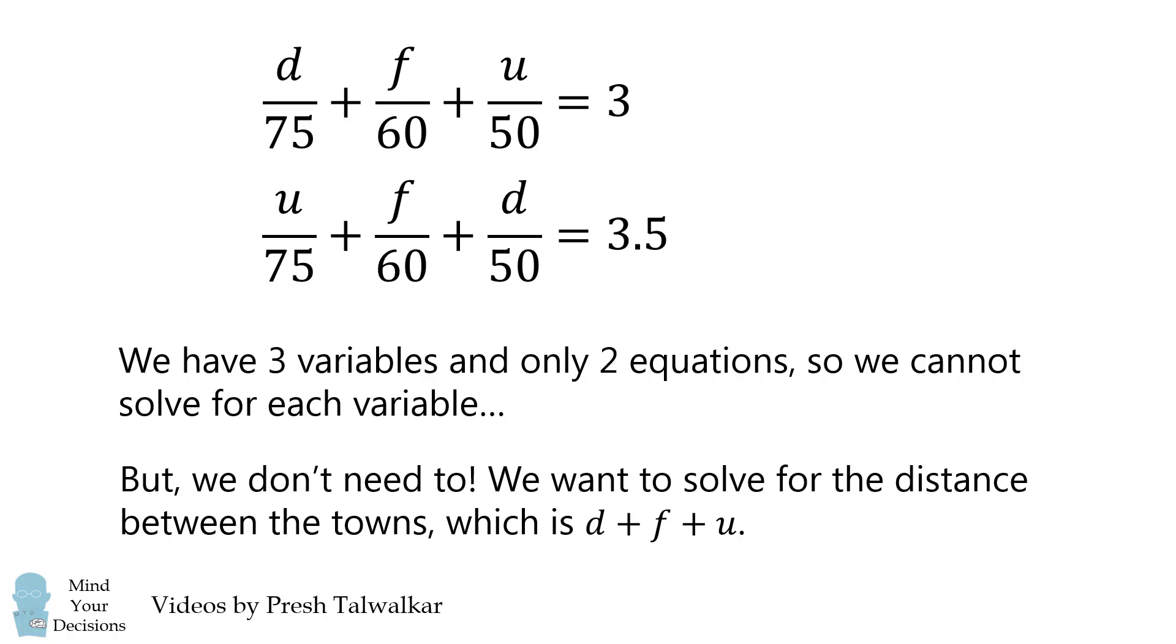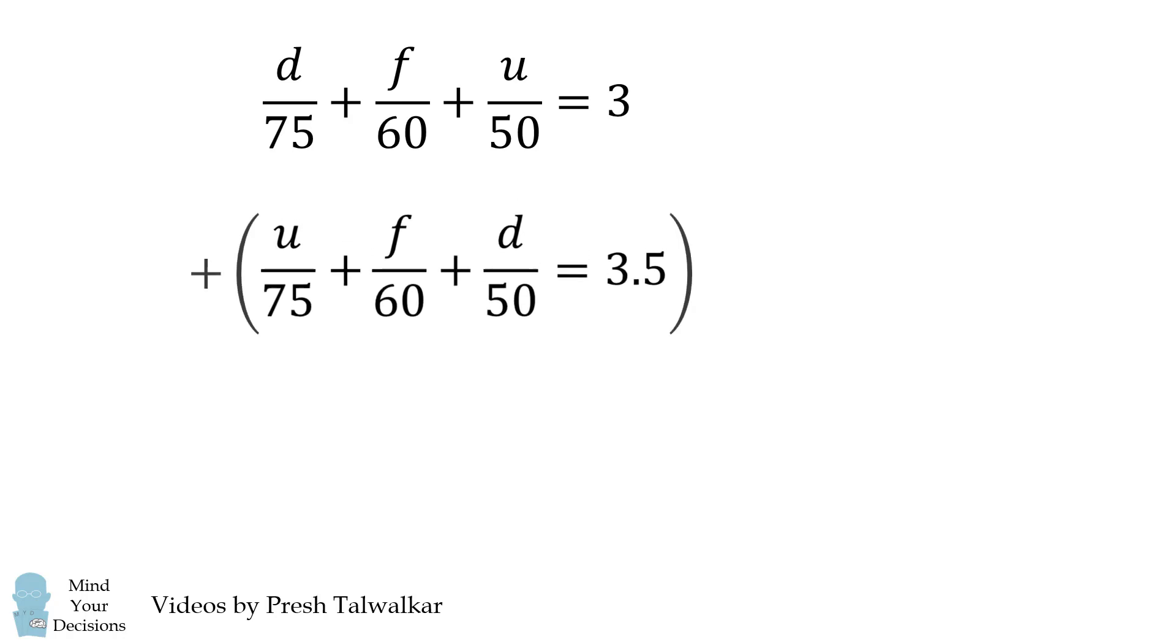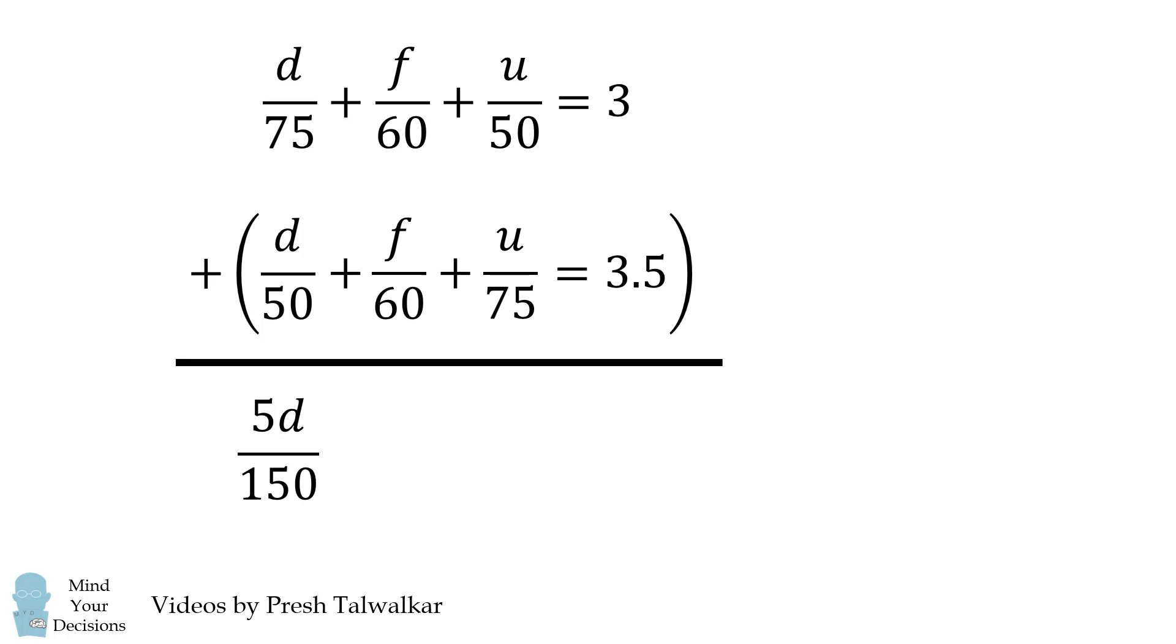Well, we're going to do a neat little trick and sum the two equations. We add the second equation to the first. Let's line up these variables and add each column. The first column becomes 5D over 150, then 2F over 60, then 5U over 150, and the sum of these is 6.5.